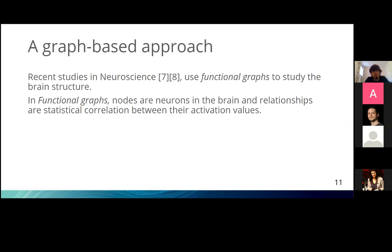In neuroscience, researchers use what they call functional graphs to study the structure of the brain. In this concept, they don't tackle the physical activities in the brain — they look only at functional activities: how neurons in the brain are firing and activating together. They build a graph where nodes correspond to neurons and relationships are connected through statistical correlations based on how neurons activate together. We think that if this can give insights on how the brain works, we can do similar things for neural networks, since the brain is much more complex than the neural networks we have today.